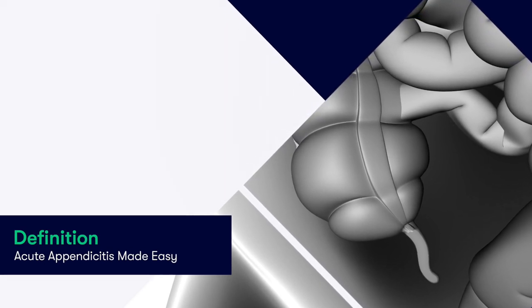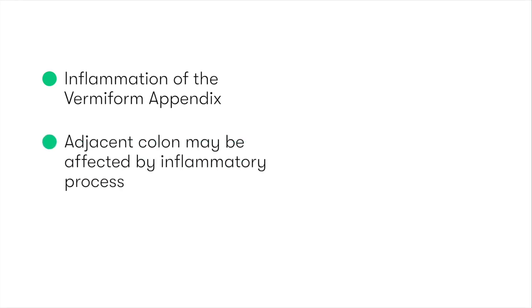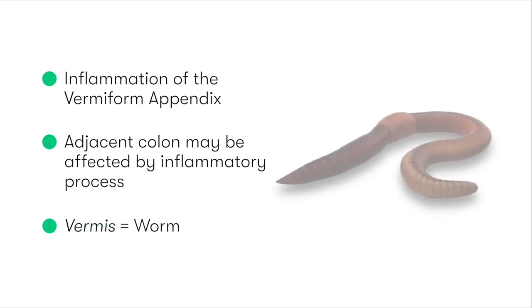So first of all, what is acute appendicitis? It's defined as inflammation of the vermiform appendix. However, this inflammatory process may extend beyond the appendix to affect the adjacent colon. The appendix is named vermiform due to its resemblance to a worm, which in Latin is vermis.